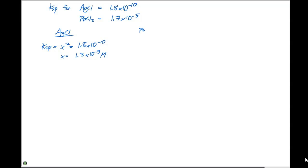For lead chloride, since we have a one to two ratio of cation to anion, our Ksp is gonna be 4x to the third. That 4x to the third is gonna be equal to 1.7 times 10 to the minus 5. And our x is gonna be 0.0162 molar.